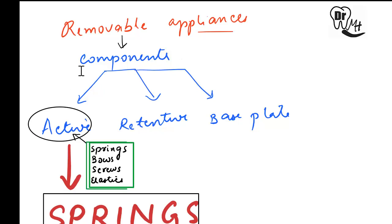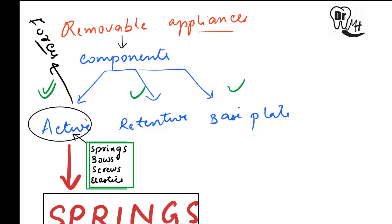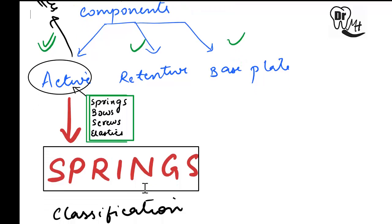In the last video we had an introduction on the components of removable appliances, and we studied that there are three components: the active, the retentive, and the base plate. In this video we'll be studying about the active component. The active components are the ones which provide the forces for tooth movement. In the active component we have the springs, the bows, the screws, and the elastics.